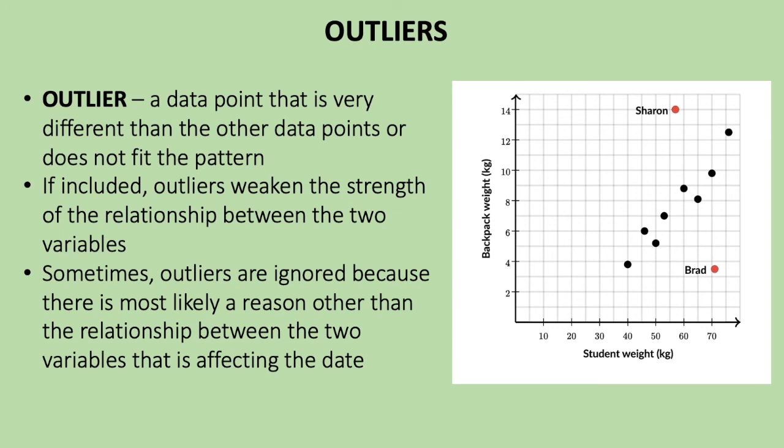So if the outliers are included in the graph or in the data collection or calculation that you create with your scatterplot, the outliers can weaken the strength of the relationship between the two variables. Sometimes outliers are ignored because there is most likely a reason other than the relationship between the two variables that is affecting the data.